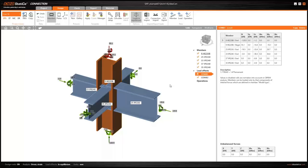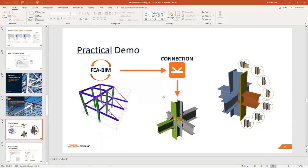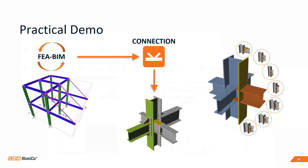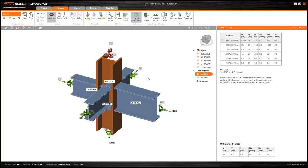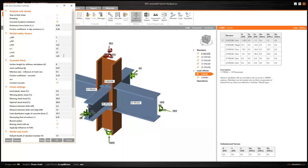Going back to the presentation: there were special requirements for this model. We have to use different steel and bolt grades not in the standard library, and we have to change partial safety factors — a requirement from the investor to make this connection more conservative. In the first step, I'll change the partial safety factors for steel members and for the connection to 1.3.